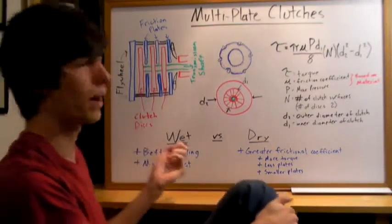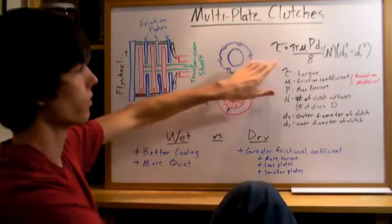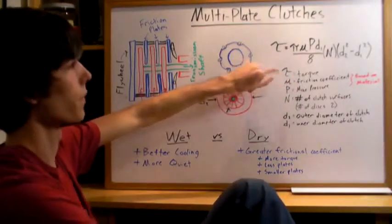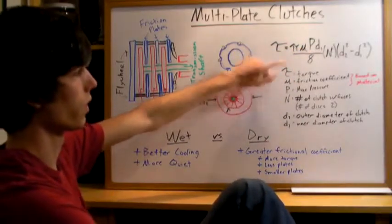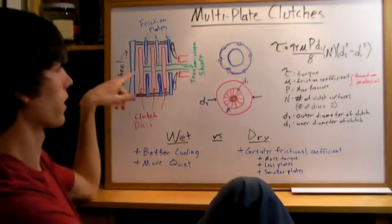Why is a multi-plate clutch needed? Well, to understand that, you've got to look at the equation for torque. This is the amount of torque that a clutch can transfer. It's a function of pi mu, which is the friction coefficient, p, which is the maximum pressure that this material can withstand.